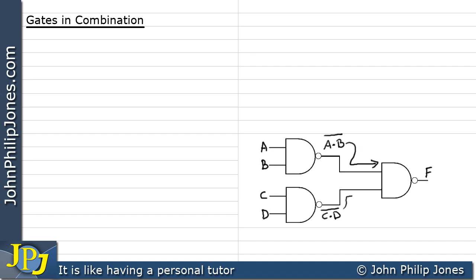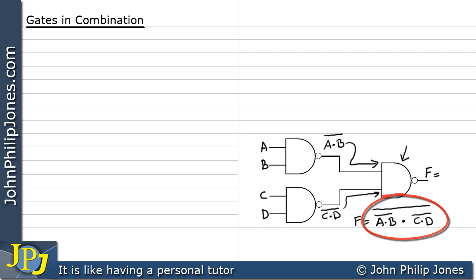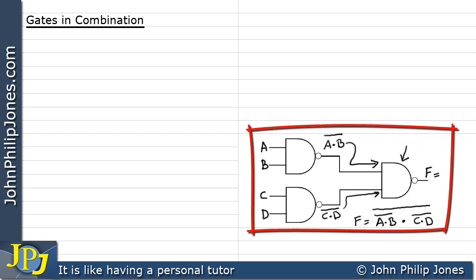NOT(A and B) acts as one input to the final gate, and NOT(C and D) acts as the other input. So F equals: the first input is A and B, all NOTted, and the other input is C and D, all NOTted. This final gate ANDs those two inputs and then NOTs them — because it's a NAND gate, meaning AND the inputs and then NOT the lot. That gives us the Boolean expression at F for this circuit.